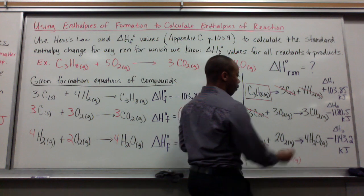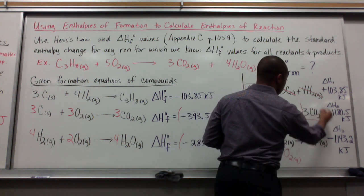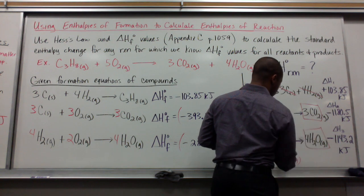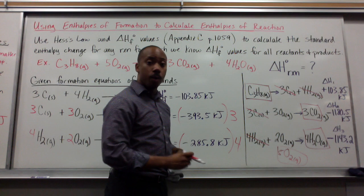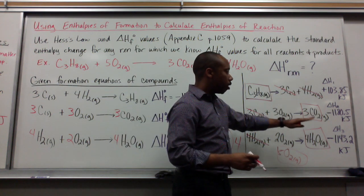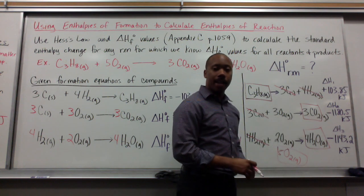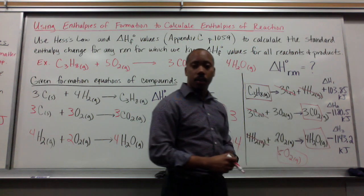In our product side we have three moles of carbon dioxide and four moles of water. Those are also what we want in our product side. So now we are ready to add up all of our individual enthalpies of formation for the reaction to get our overall delta H⁰ of the reaction.